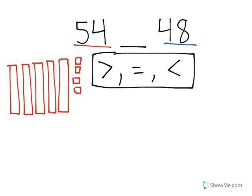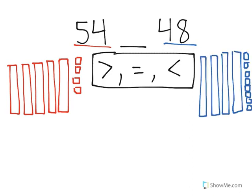On the other side, I'll represent the number 48. Now as you can see, I can tell something already. I can see that over in 54 here, I have 5 groups of 10. Whereas in 48, there are only 4 groups of 10. That already tells me that if I have more groups of 10, then 54 is greater than 48. There are more in 54 than there are in 48.